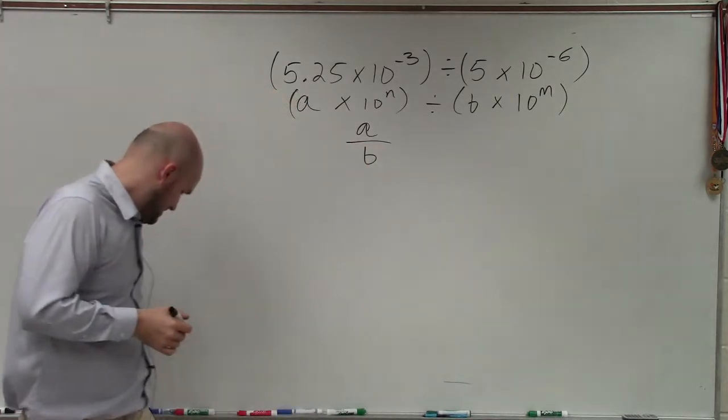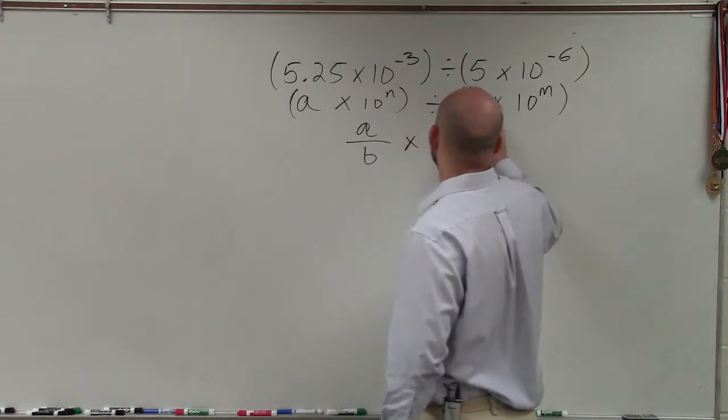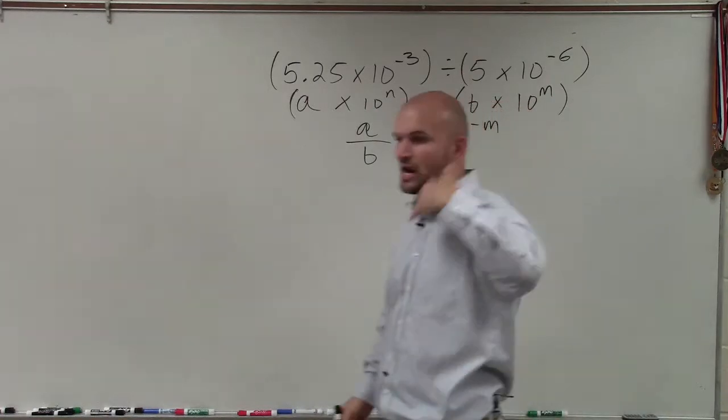We're just going to divide a by b and then times 10 to the n minus m. Because remember the properties of exponents: when you divide exponents, you subtract the powers.